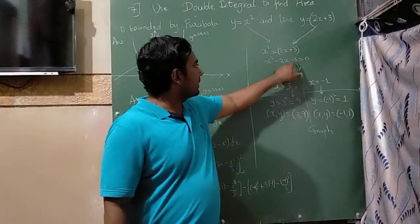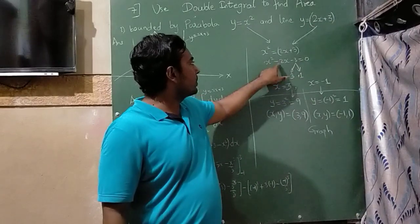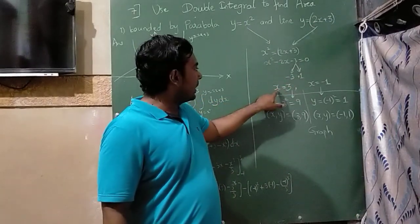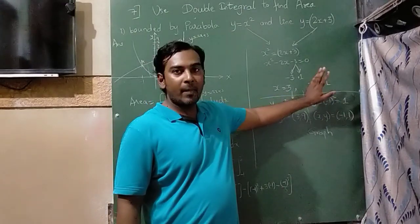So I have taken two numbers here, 3 ones are 3, minus 3 plus 1 becomes minus 2. So I will get x value as 3, x value as minus 1.